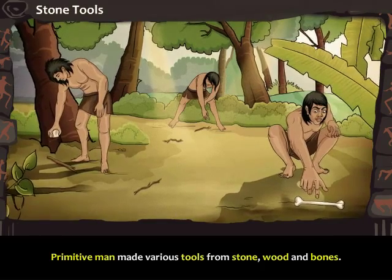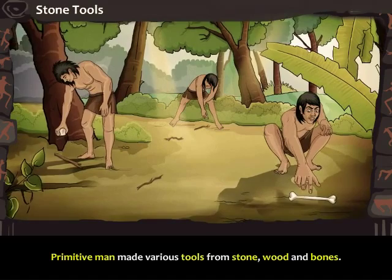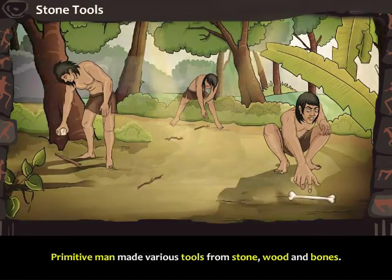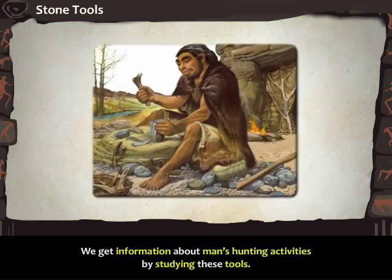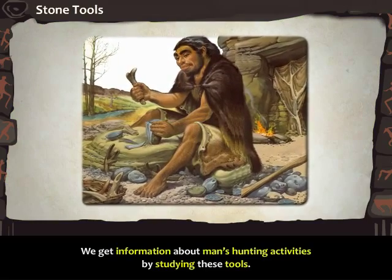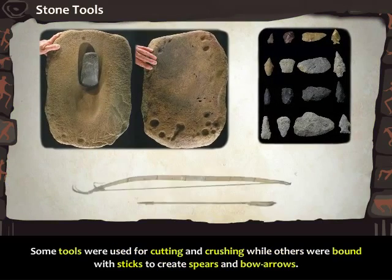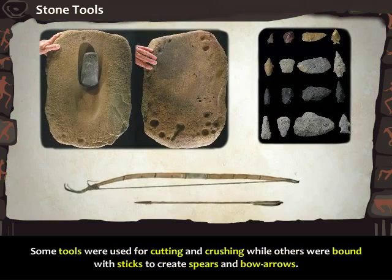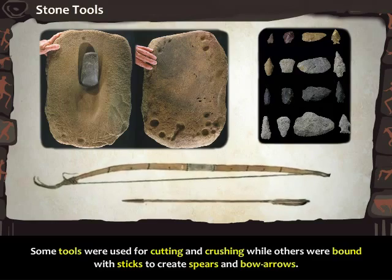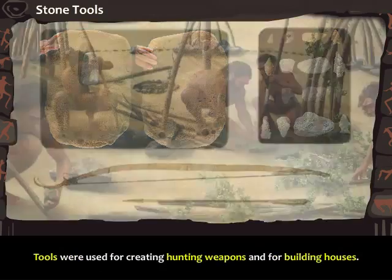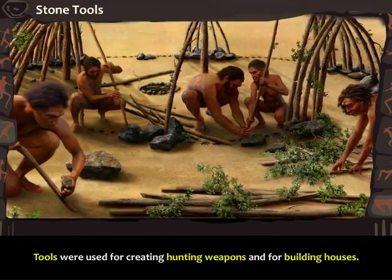Primitive man made various tools from stone, wood and bones. We get information about man's hunting activities by studying these tools. Some tools were used for cutting and crushing, while others were bound with sticks to create spears and bow arrows. Tools were used for creating hunting weapons and for building houses.